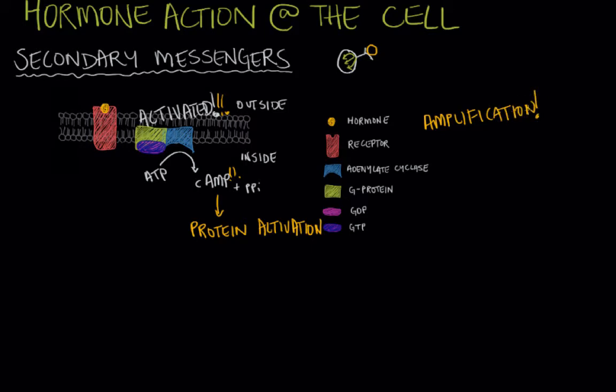We call this signal amplification. What I mean by signal amplification is that, in theory, one hormone can bind to a receptor, and that process can set off a chain reaction that leads to a lot of cAMP being produced. So it can mean that less hormone is required to ultimately activate the protein or the effect that's being desired.